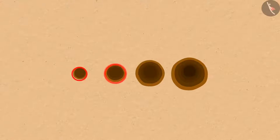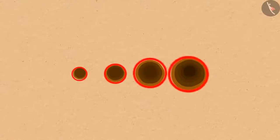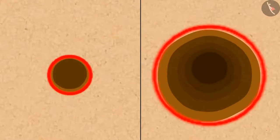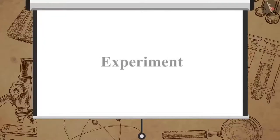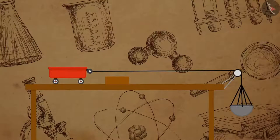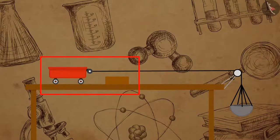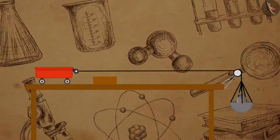Which depression is the deepest and which is the shallowest? What led the ball to cause a deep or shallow depression in the sand? Now let us find the answers by performing another experiment. In this setup, a wooden block with fixed mass is placed at some distance from a trolley, and a known mass is kept on the pan to displace the trolley.